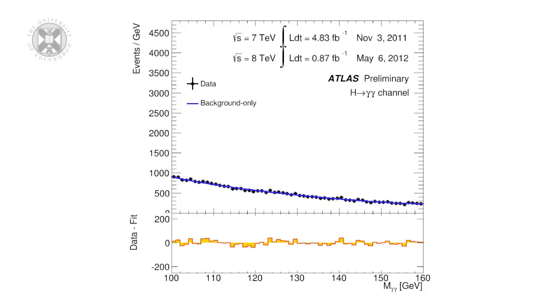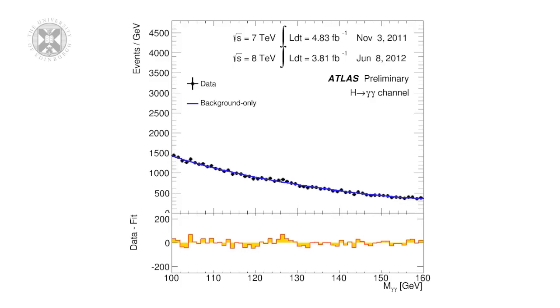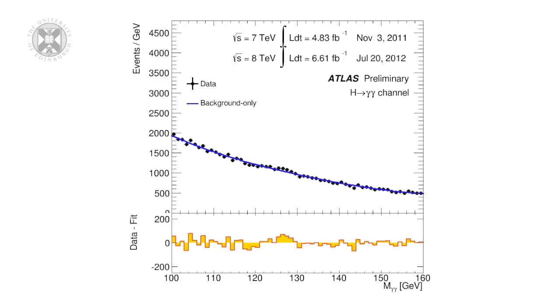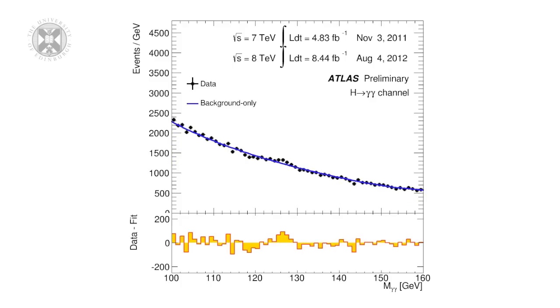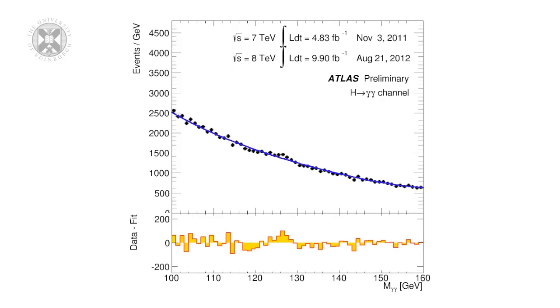Most of this is the background, indicated by the blue curve. If there is a Higgs, it should appear as an extra peak located at a given value, the mass of the Higgs. It is very difficult to find such a peak on top of a large background.